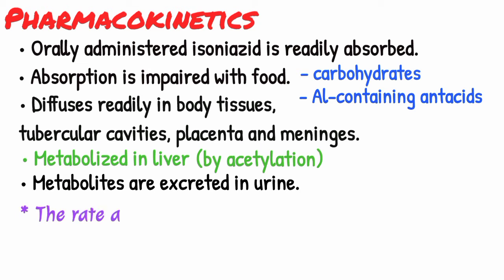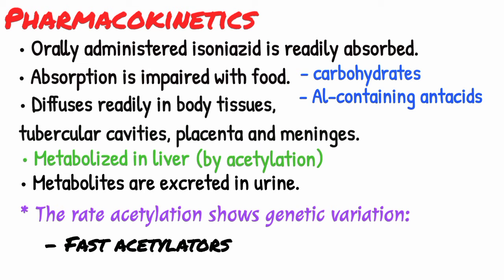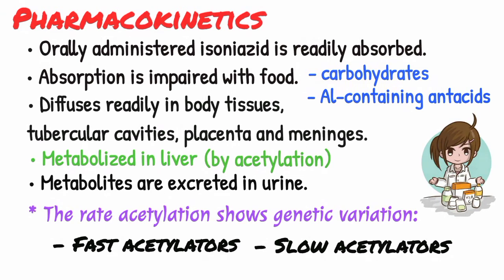The rate of isoniazid acetylation shows genetic variation. There are either fast acetylators or slow acetylators, with slow acetylators enjoying a better therapeutic response.